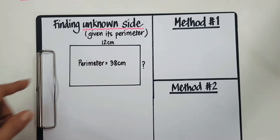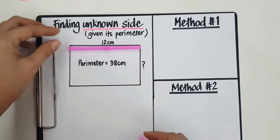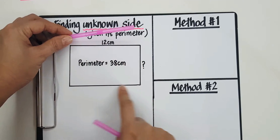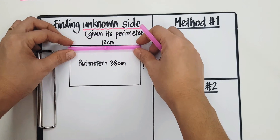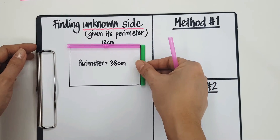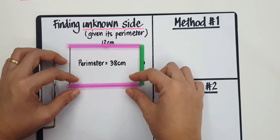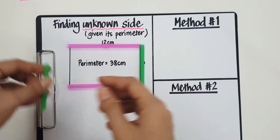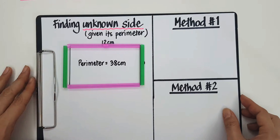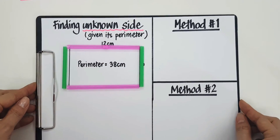I have used straws to show the distance. Parameter is basically the length around an object, a figure. So I have the length, and I have a breadth that I do not know how long, and I have another length which is also equal to 12, and another breadth. So basically, if I want to find the parameter, I would have to add up the length of all my straws.